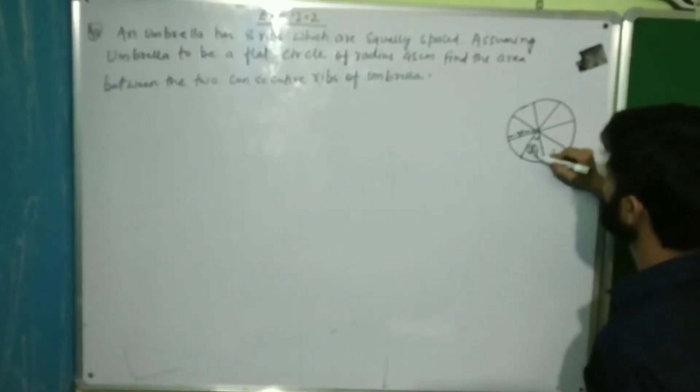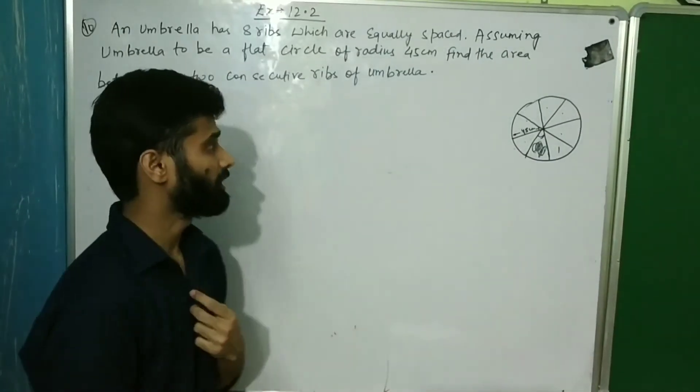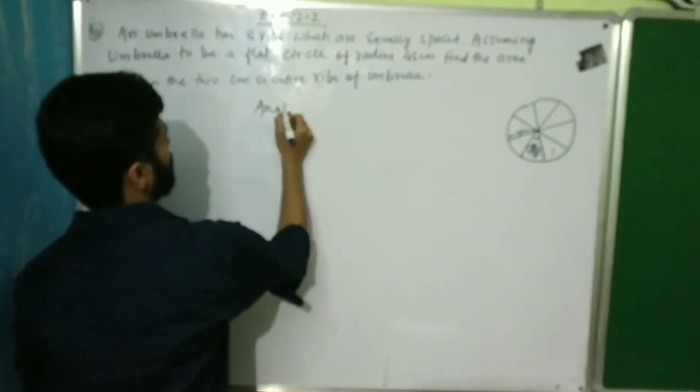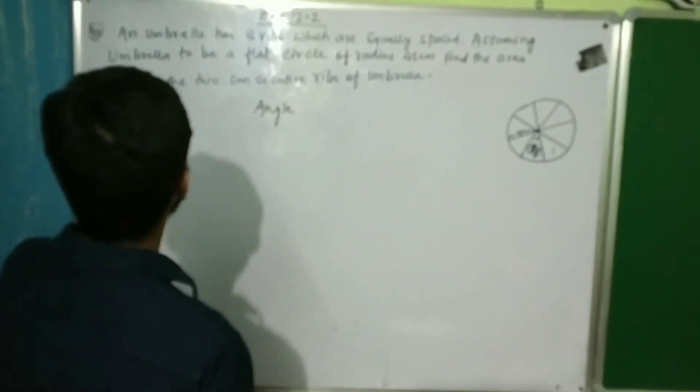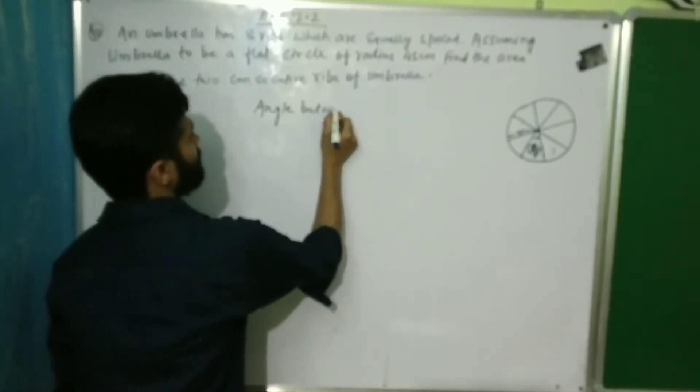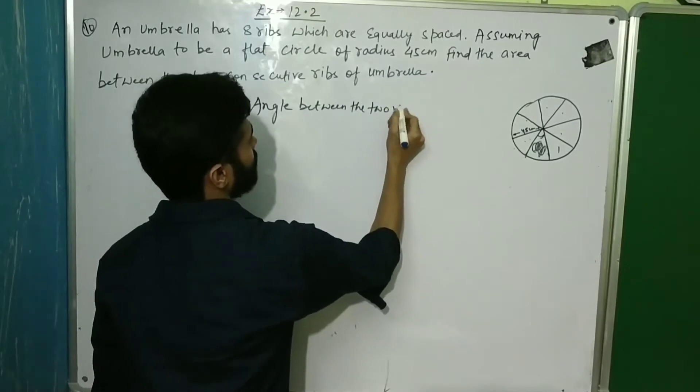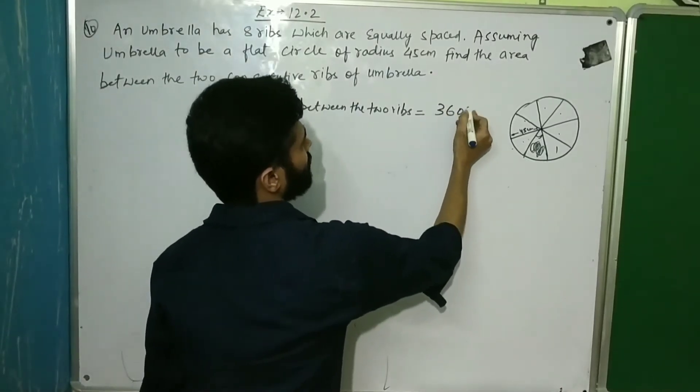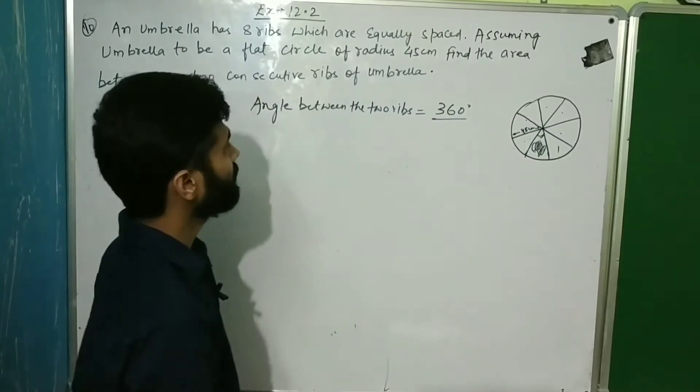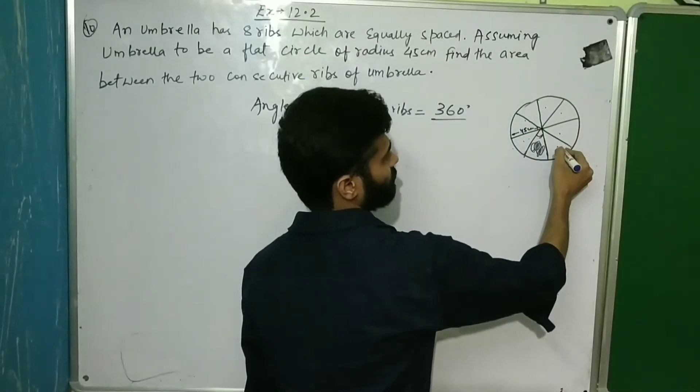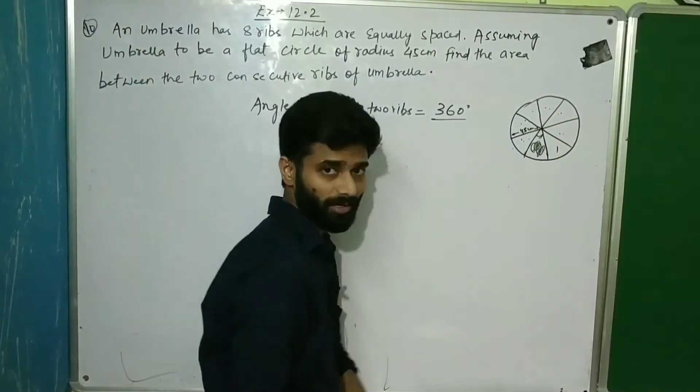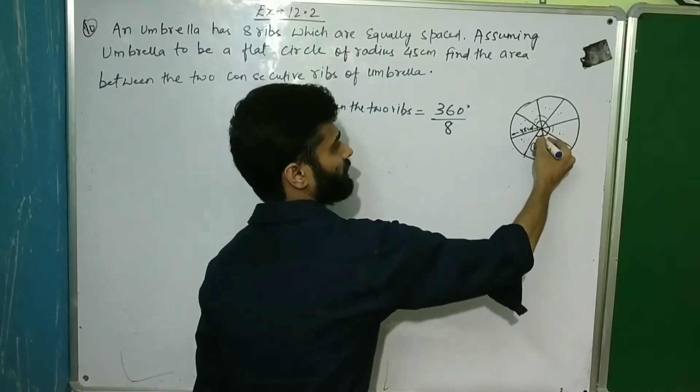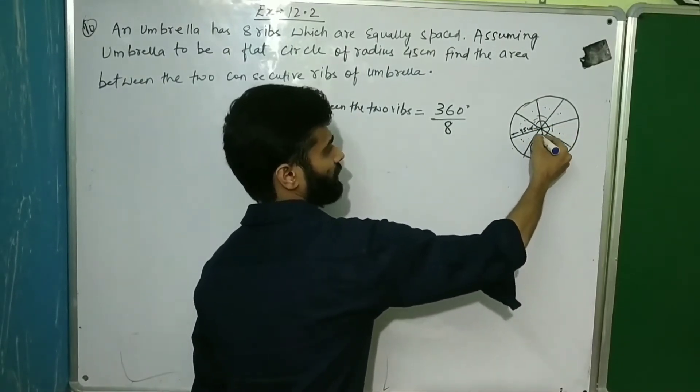What is the area? This area is asking us. This area, what will happen? This area of the sector is formed. Now, this line is formed, this line is formed, and it is important to find the angle. The angle between the two ribs, how many sectors are there? So how many areas, this is 8 angles where the two ribs, all these angles are equal.